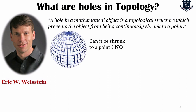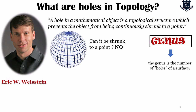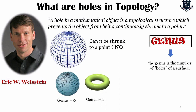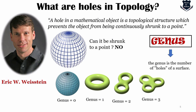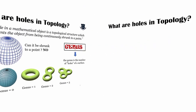If a mathematical object is being prevented from continuously being shrunk to a point, that is what is called a hole. If I see a sphere, can it be shrunk to a point? No. So these holes in technical terms of topology are called genus. The genus is the number of holes on a particular surface. The genus of a sphere is 0, while that of a torus is 1. For a two-hole torus it is 2, and for a three-hole torus it is 3.